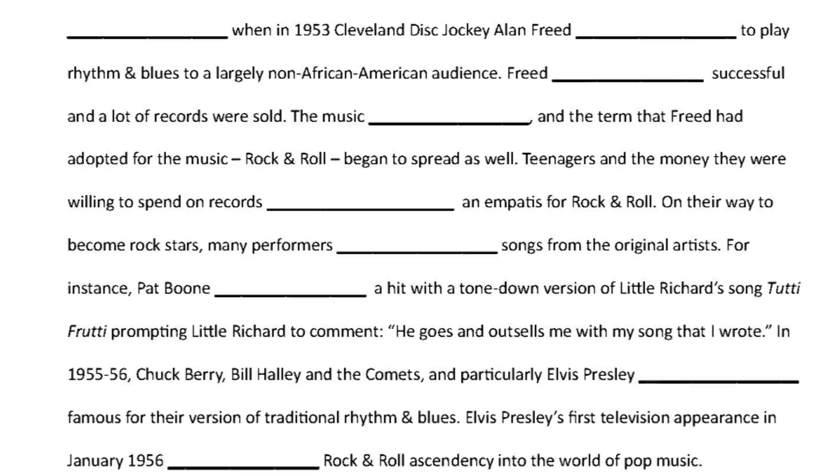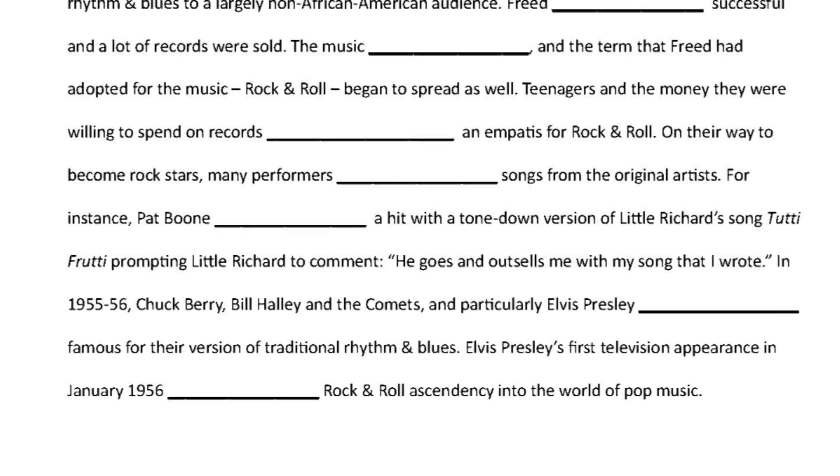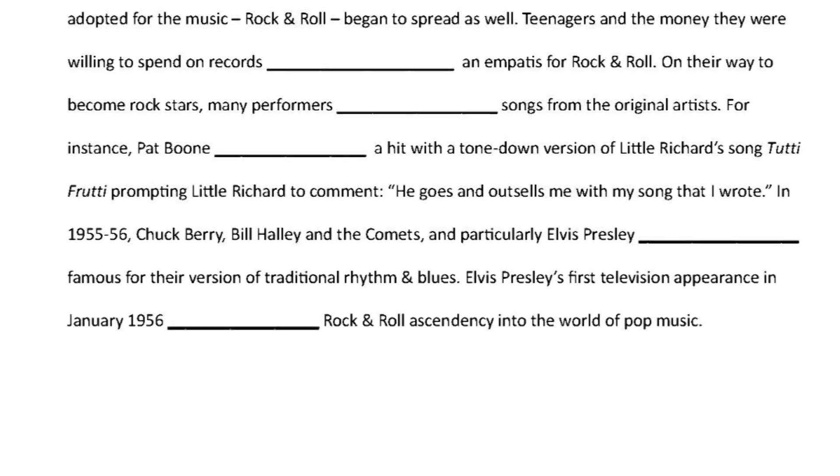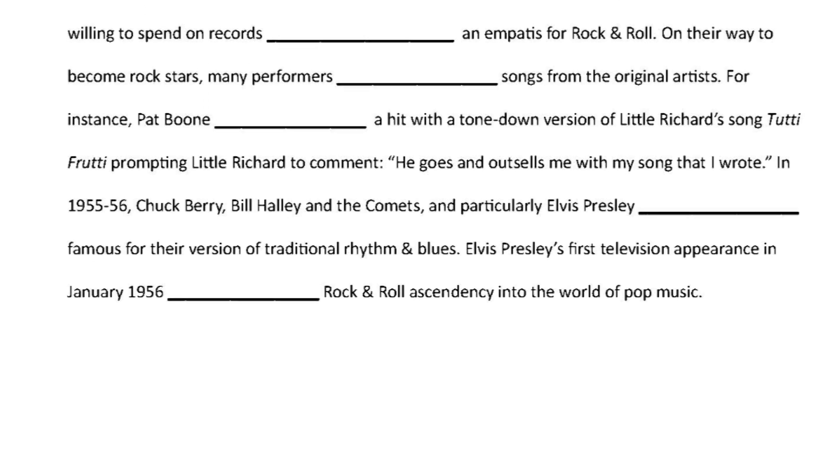Teenagers, and the money they were willing to spend on records, provided an impetus for rock and roll. On their way to becoming rock stars, many performers copied songs from the original artists. For instance, Pat Boone scored a hit with the toned-down version of Little Richard's song, Tutti Frutti, prompting Little Richard to comment...